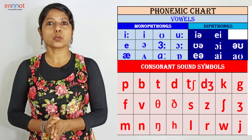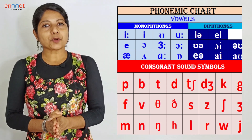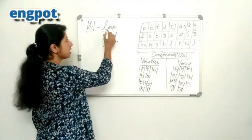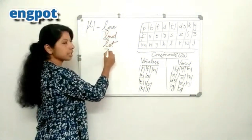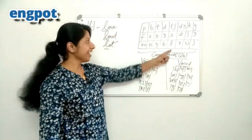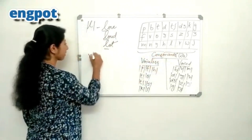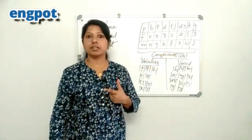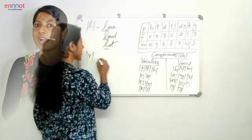But when it comes to pronunciation, there are 24 consonant sounds and 20 vowel sounds. Before we proceed, let me tell you about the video in which I've covered all 24 consonant sounds with examples, and I've also classified these sounds into voiced and voiceless consonant sounds. The link is provided in the description, so have a look at it.